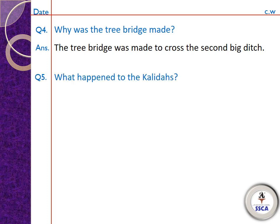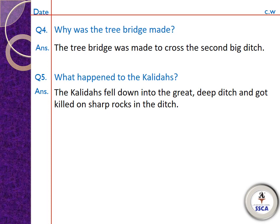Question number 5: 'What happened to the Kalidas?' — Kalidas ke saath kya hua tha? The Kalidas fell down into the great deep ditch and got killed on sharp rocks in the ditch. Kalidas us great deep ditch mein gir jate hain aur us ditch mein neeche sharp rocks hoti hain, un pe gir ke mar jate hain.